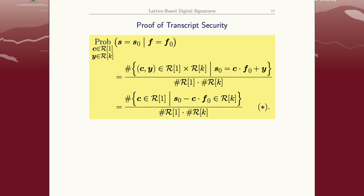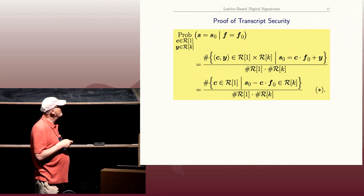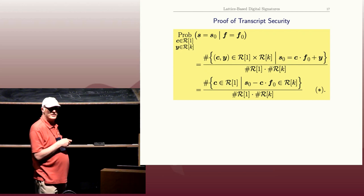Well, let's analyze this a little more closely. How many c comma y's are there? Well, once I pick my c—remember s_0 and f_0 are fixed—once I pick my c, there's only one possible y, namely s_0 minus c·f_0. And that y is only allowed in this pair if its coordinates are at most k.